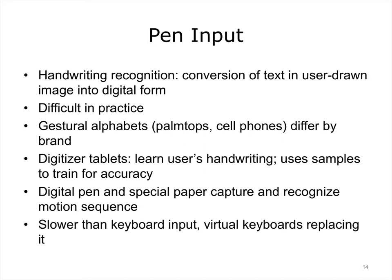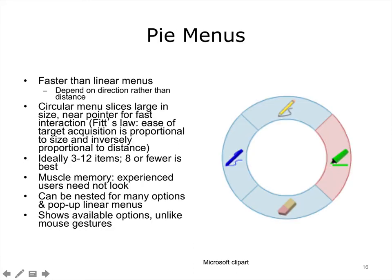Pen input is increasingly common, particularly with small tablets and handheld devices. Gestural alphabets turn users' writing into digitized form. This form of input is slower than keyboard input, and so is being replaced in handhelds by virtual pop-up keyboards. Pie menus are commonly found in video games. They are faster and more reliable for selection than linear menus, since they depend on direction rather than distance. Human ability to detect differences in degrees of angle is very acute. When the circular menu slices are large in size and the pointer is near them, selection is fast.